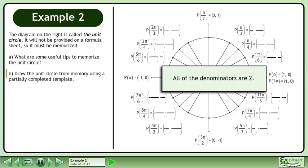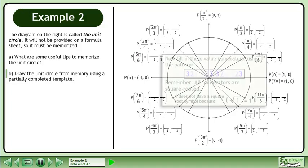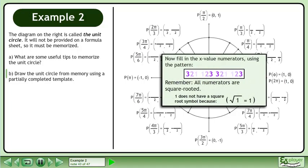All of the denominators are 2. Take a moment to write 2's in the denominator of each fraction. Now fill in the x value numerators using the pattern 3, 2, 1, 1, 2, 3, 3, 2, 1, 1, 2, 3. Remember, all numerators are square rooted. 1 does not have a square root symbol because the square root of 1 equals 1.